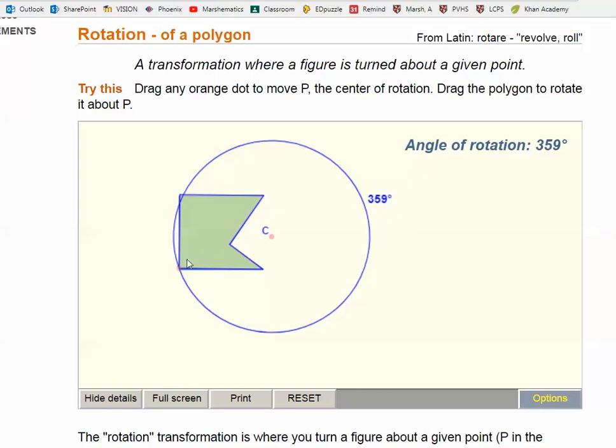Right now it says 359 because when I get back to start, there's the 360. It shows zero again.